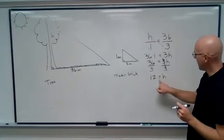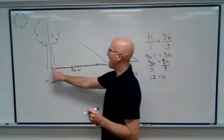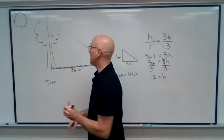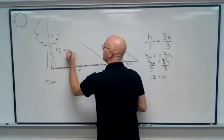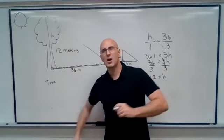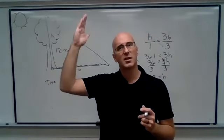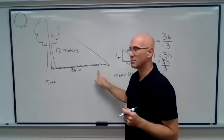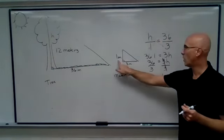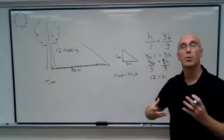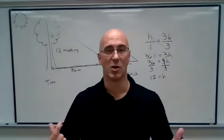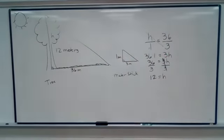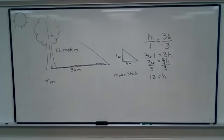So what did we just find H equals 12? What that just showed us is the height of this tree is 12 meters. Does that sound right? 12 meters cast a shadow of 36 meters. Same thing as one to three. So that is our proportionality. So our tree is 12 meters tall. Thank you.